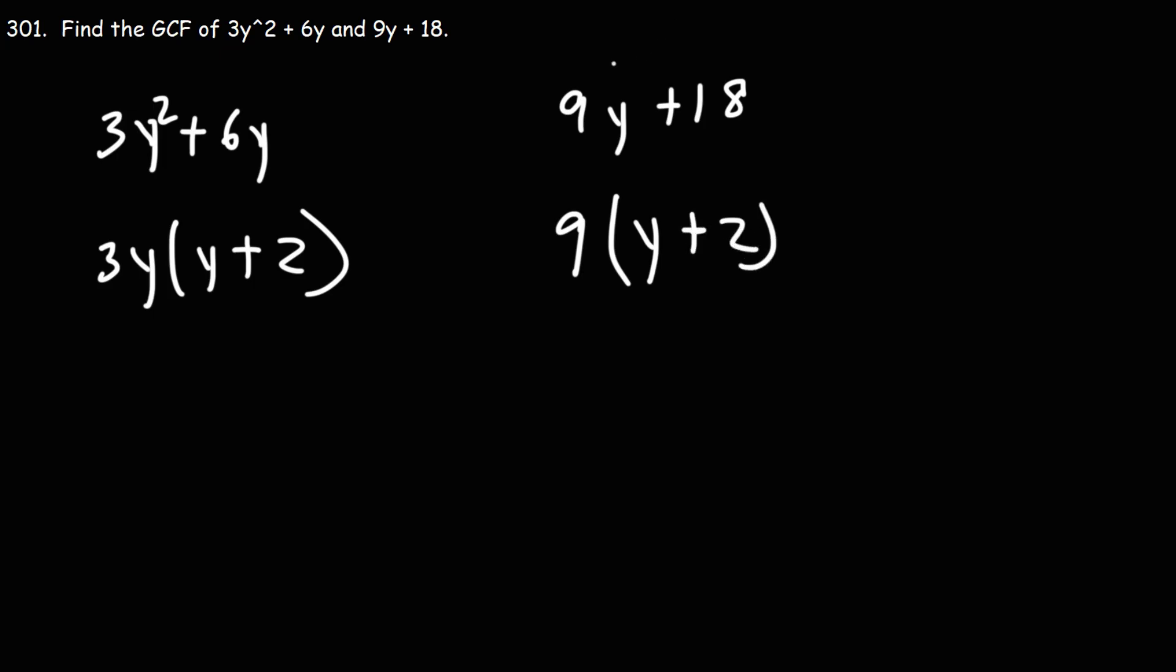So between 9y and 18, 9 is the GCF, the greatest common factor. For 3y squared and 6y, it's 3y. But now, what is the greatest common factor between these two expressions?